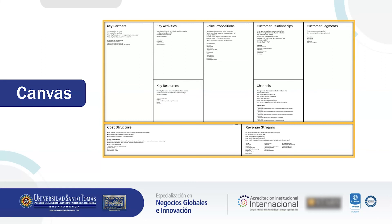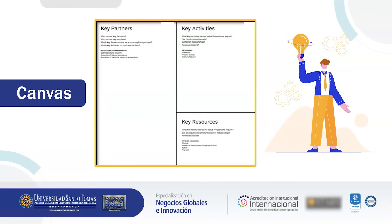The first part of the canvas contains key partners, key activities, and key resources. First, key partners: the goal is to identify key partners and suppliers, have clarity about all the diverse resources you are acquiring from them and the activities they perform for you. Second, key activities: bearing in mind the value proposition, identify what are the key activities, distribution channels, and customer relationships required to generate the value. Third, key resources: identified according to the key activities, we need to identify what are the indispensable resources.